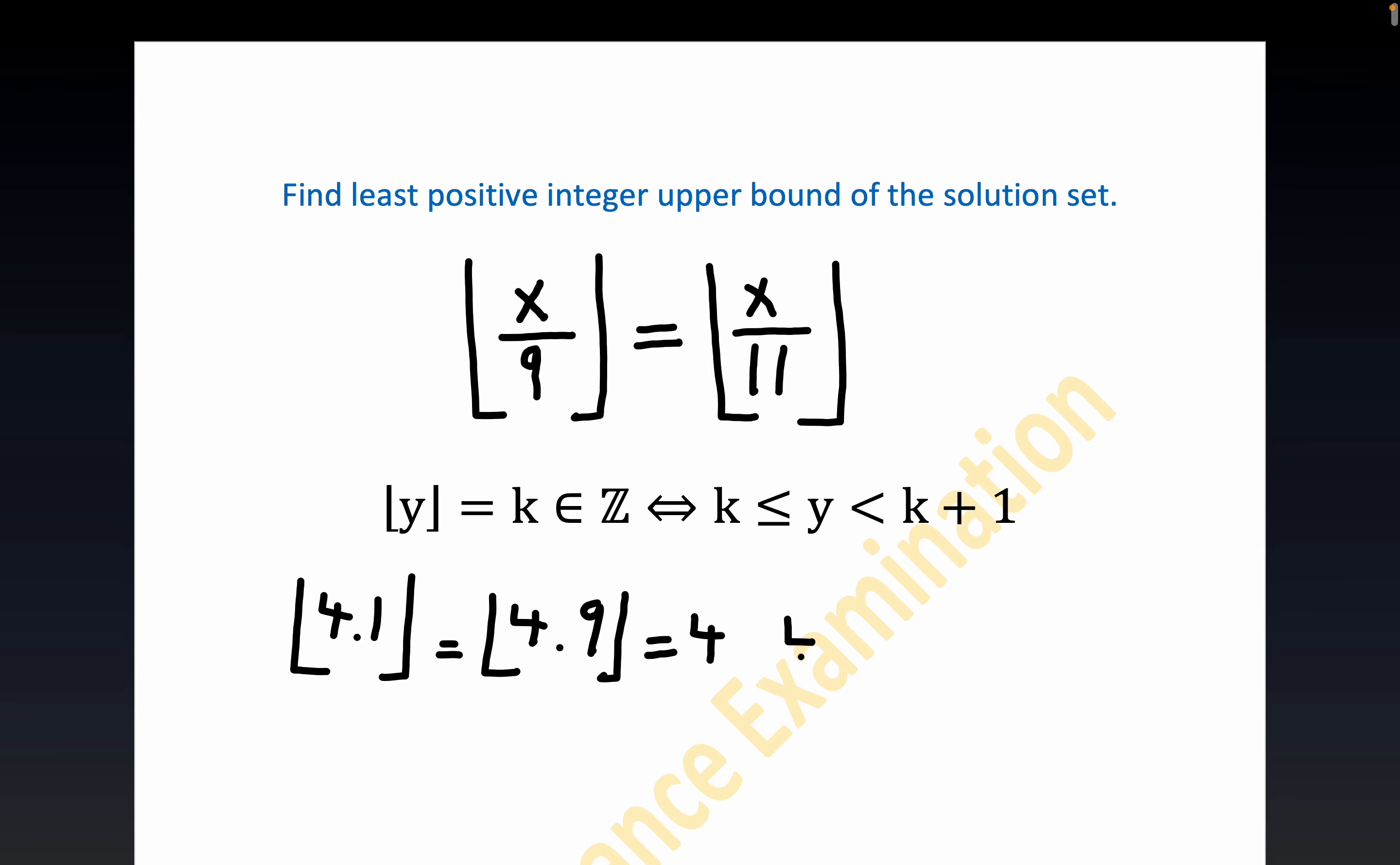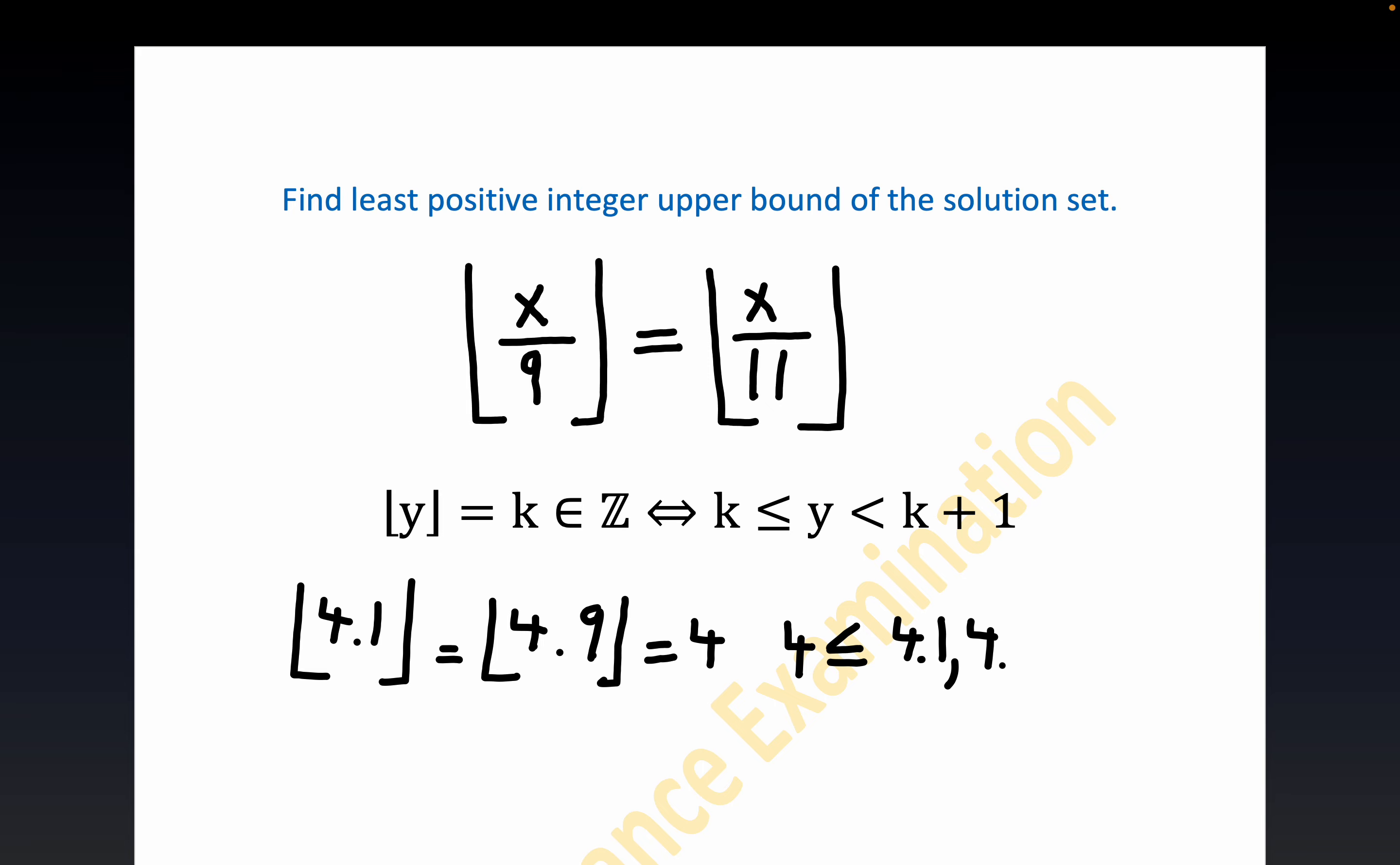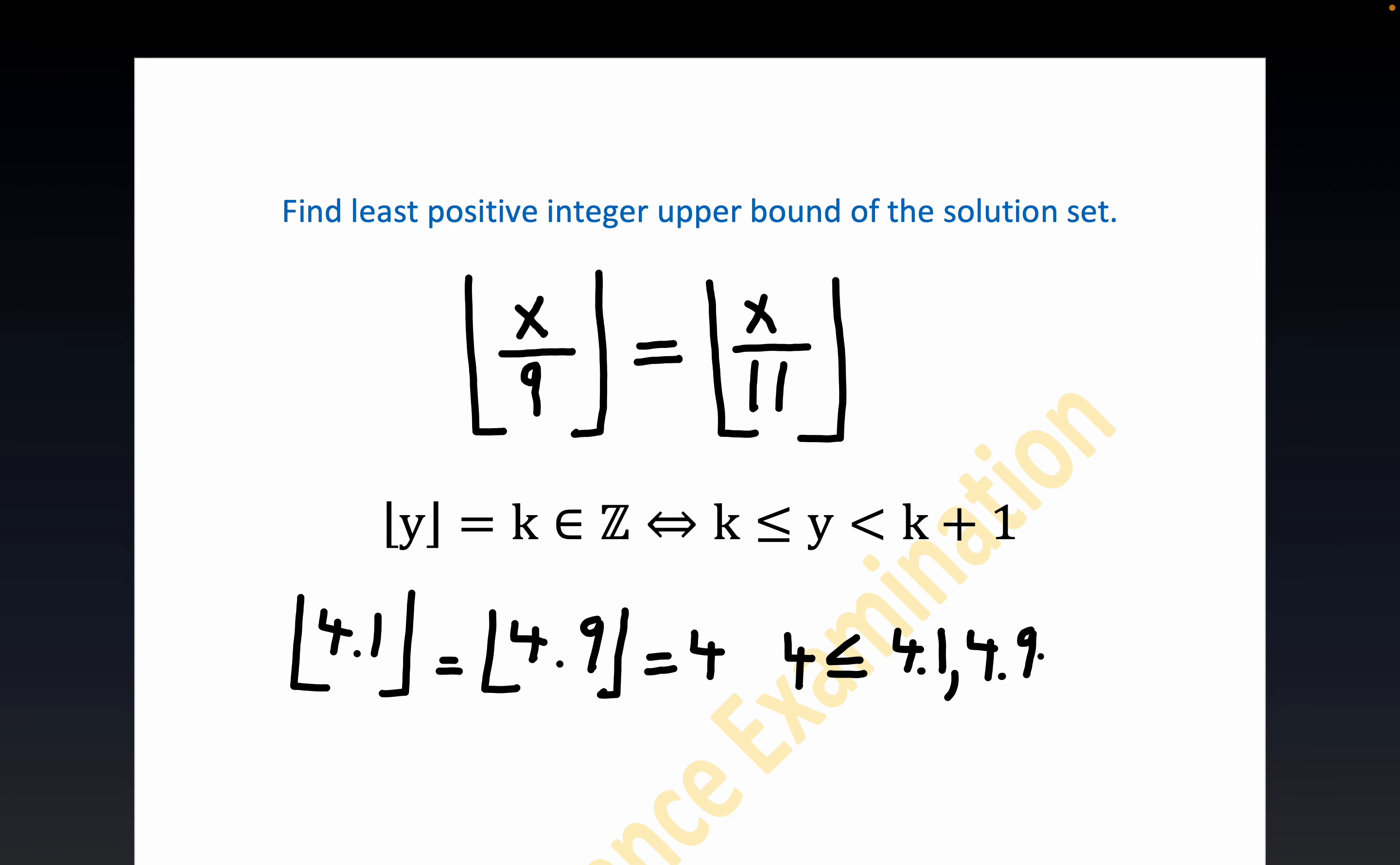Using the right-hand side of this definition right here: 4 is less than or equal to 4.1, and I'll put a comma here, 4.9, and that's strictly less than 4 plus 1, which is 5, right?